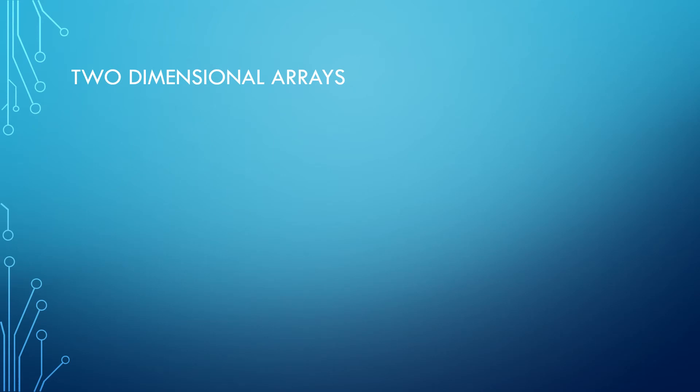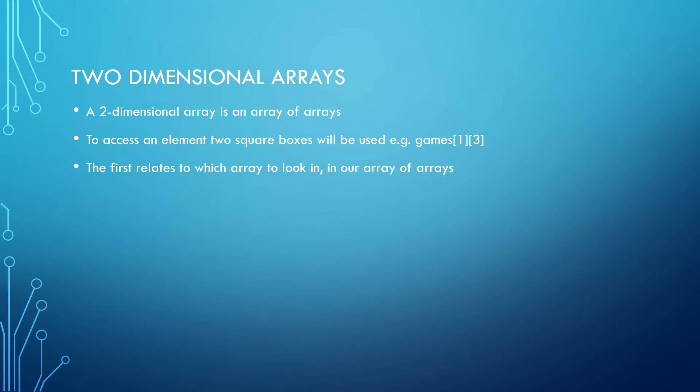A two-dimensional array is an array of arrays. To access an element in a two-dimensional array, you will need to use two square boxes instead of one. The first relates to which array to look in, in our array of arrays. The second says what position to look in in that array.